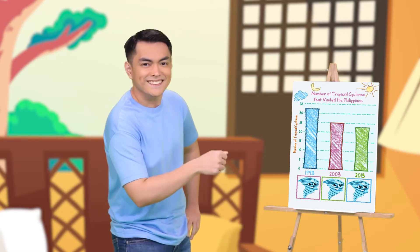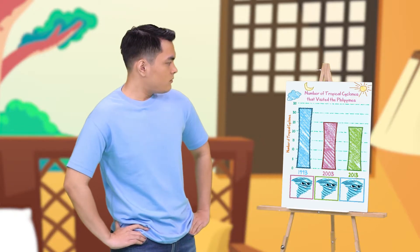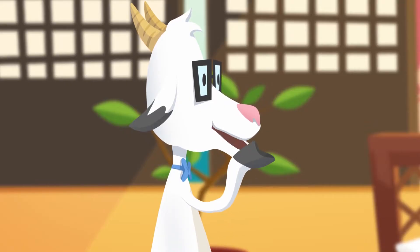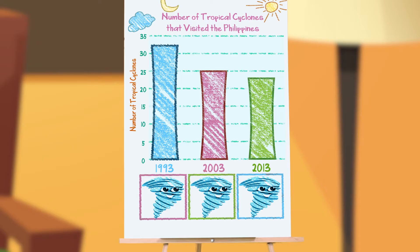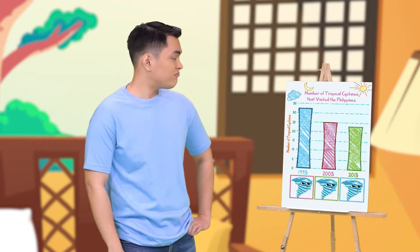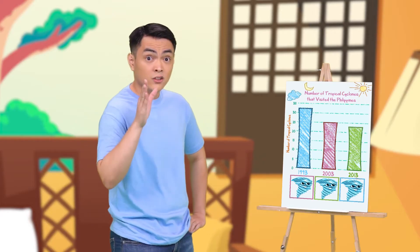I totally agree. Why are you looking at that bar graph anyway? Well, I'm just wondering if we are going to have more typhoons this year. Did you find out yet? Well, there were less typhoons in 2003 and 2013 than in 1993. Hopefully, the numbers don't get high this year. But it's really hard to tell. But at least we have an idea, right? That's right.